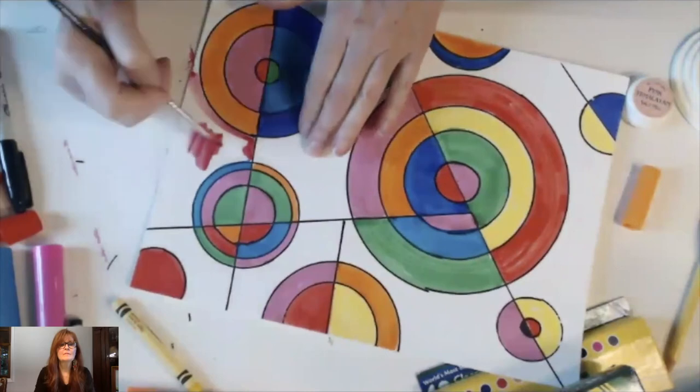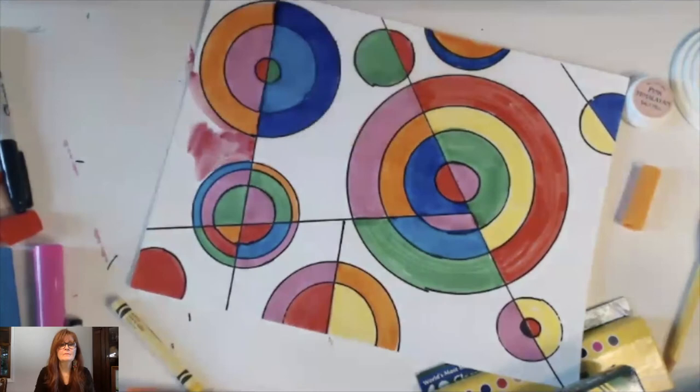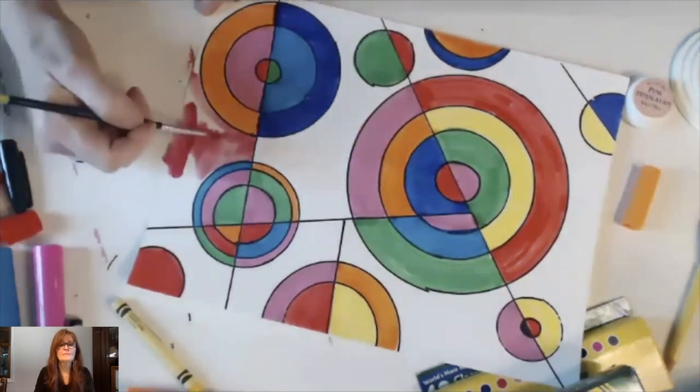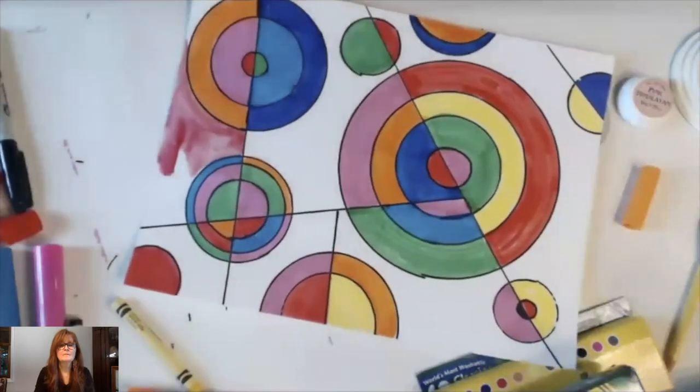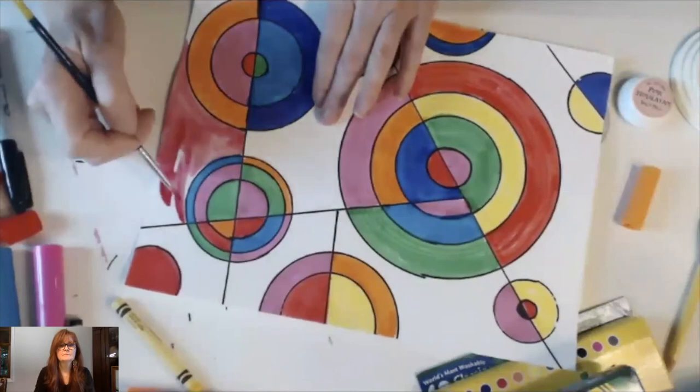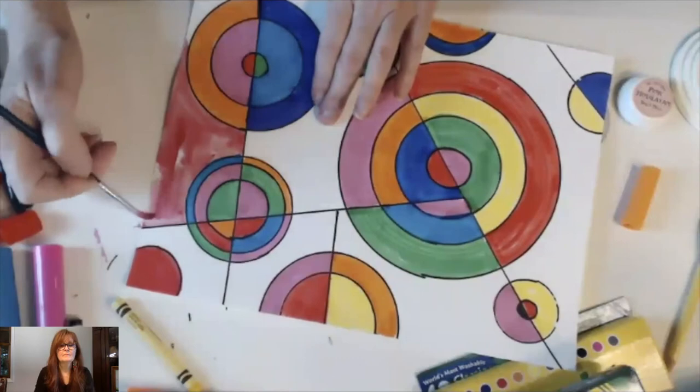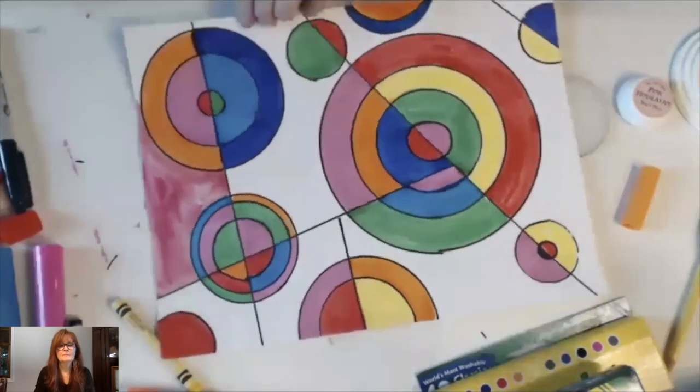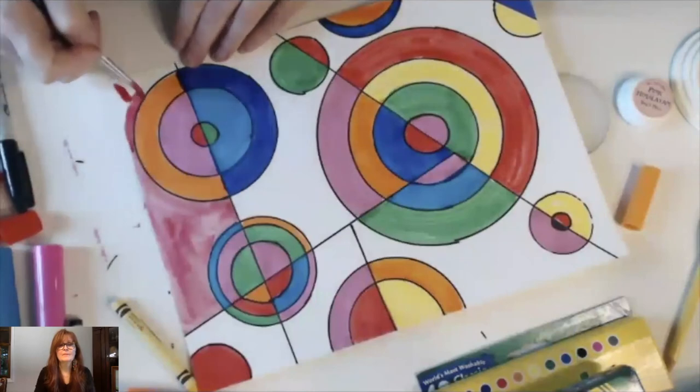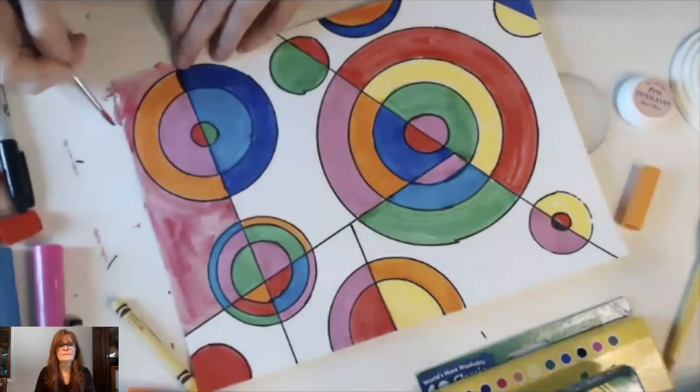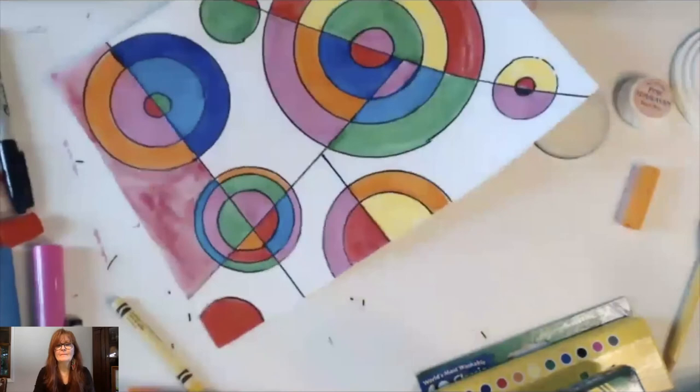But if I wanted to come in, I would just try to keep my watercolor away from my marker area because it could make it run. I used a Sharpie on my black line, so it's not going to run. But if you used a marker that was like a Crayola black marker, it would run. If you use a black crayon, it won't run. So I recommend since you're first grade that you use a black crayon to outline your shapes. And then you can fill in with markers or watercolor or crayons. So that's how it would look filling in with watercolor.